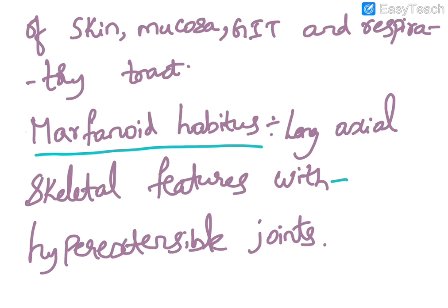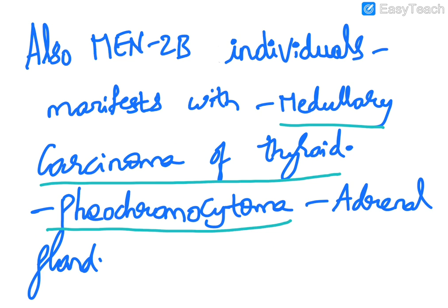MEN2b individuals also manifest with Marfanoid habitus, explained as long axial features with hyperextensible joints. Additionally, they present with medullary carcinoma of the thyroid and pheochromocytoma involving the adrenal gland.